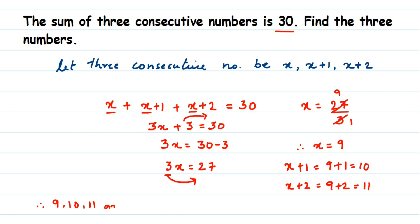Therefore, the three consecutive numbers are 9, 10, and 11. You can add them and check: 9 plus 10 plus 11 equals 30, which matches the given condition. I hope this question is clear. In case you have any other question or doubt, you can drop a comment. Thank you so much for watching.